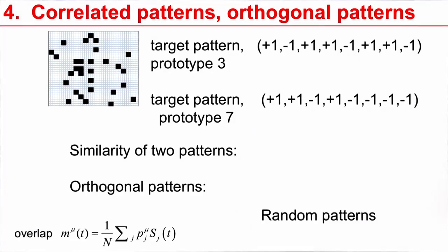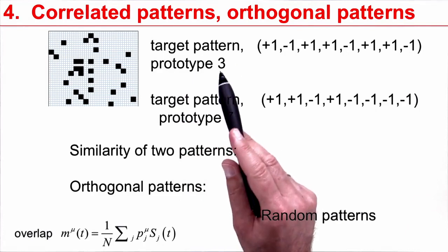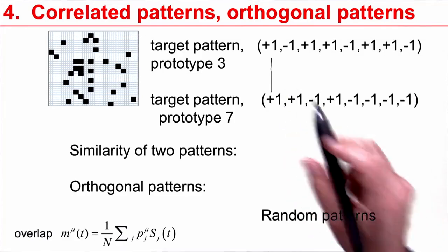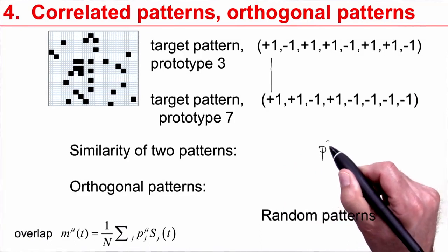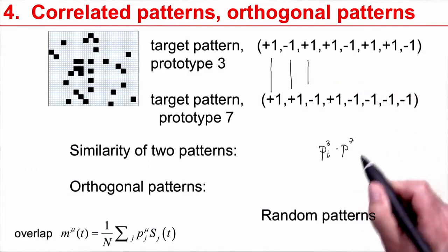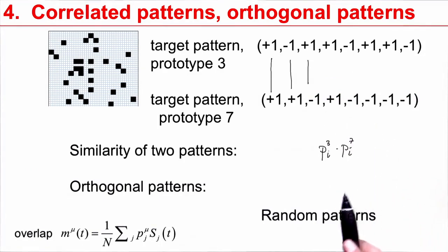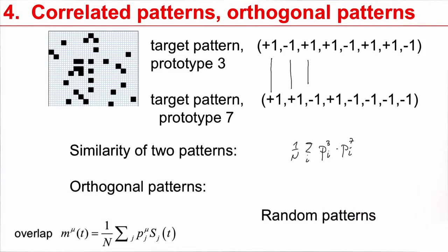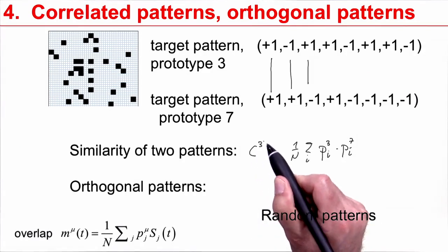Before we continue, let me extend this a little bit. Previously, I said we can compare the current state with one of the prototype patterns. But of course, we can, in the same way, also compare the target pattern or prototype pattern number 3 with prototype pattern number 7. We can look at the similarity of two patterns and say, I just take pattern number 3, P3, at location i, then sum over different locations and compare that with the pixel at location i of pattern number 7. Then I sum over i and take 1 over n. This is completely analogous to the similarity measure we had for the overlap. It's now similarity between two patterns or correlation between two patterns. This is the correlation between pattern number 3 and pattern number 7.